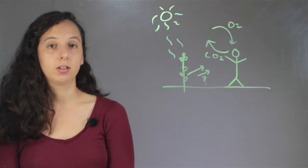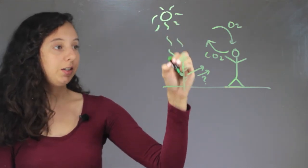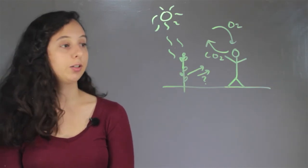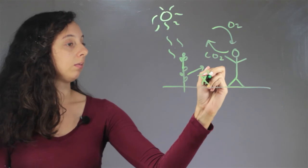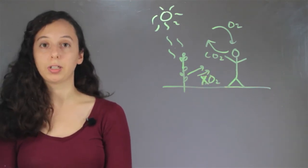So during photosynthesis, the plant actually turns the sun rays into energy, and then as a result, oxygen is let off. It's a byproduct, which is actually great for us because we really, really need that.